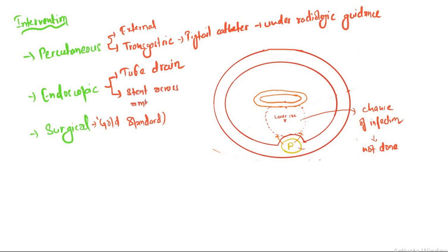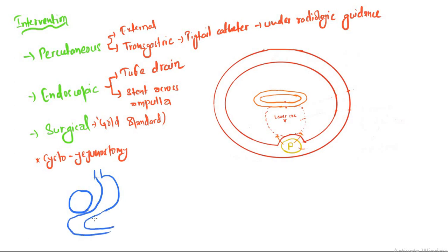Let's discuss the surgical—the gold standard. There are two types of surgery here. One is where we connect the cyst to the jejunum. We perform a Roux-en-Y operation—cystojejunostomy.